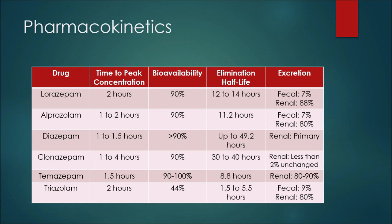In terms of excretion for triazolam, we have 9 percent fecal and 80 percent renal. Alright everybody, that's all we're going to talk about today — comparing the pharmacokinetics of six different benzodiazepines. As always, I'm very thankful you took the time to watch one of my videos. If you found the information valuable and you'd like to help grow this channel, remember you can like the videos, share the videos, or most importantly subscribe to the YouTube channel. There are also some links in the description you can check out as well. Take care.